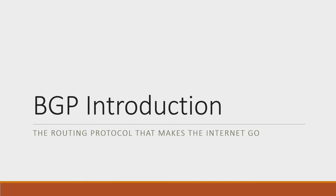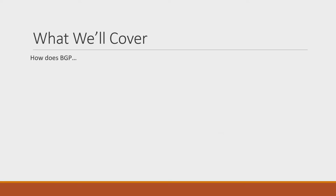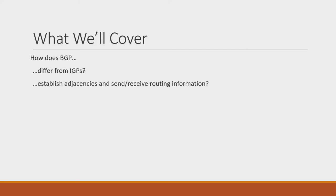I assume that level of familiarity with the other concepts touched on in this video. Our goal is to answer some basic questions about BGP, including: How does BGP differ from Interior Gateway Protocols or IGPs? How does BGP establish adjacencies and go about sending or receiving routing information? How does BGP determine the best path to a given prefix or network? How does BGP prevent routing loops? I answer each of these questions in this video. Let's start with the first one.